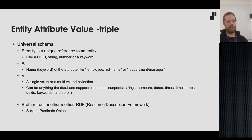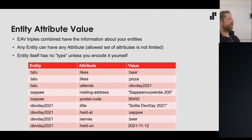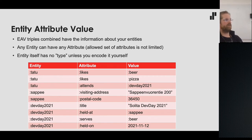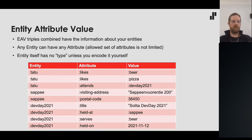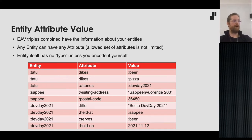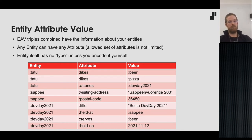In the EAV model, your data consists of these triples — that's all the information you have about your entities. In this small world example, an entity can have any attribute; the allowed set of attributes is not limited. An entity itself doesn't have a type unless you encode it yourself as a 'type' attribute.